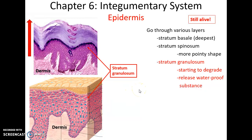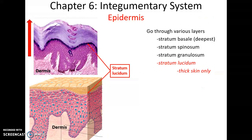Further up, cells get pushed into the stratum granulosum. Here the cells start to flatten a little bit and begin to degrade as they enter the keratinization process, forming many keratin proteins inside their cells. It is also here that they release a waterproof substance to help give the skin resistance to water loss. The cells are still alive at this stage.